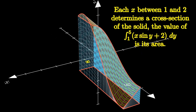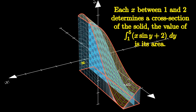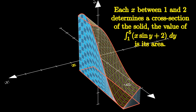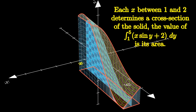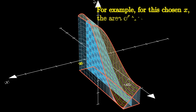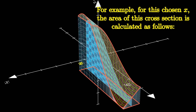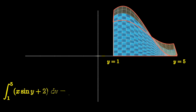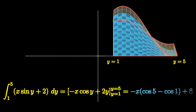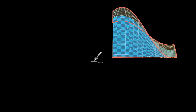Each X between 1 and 2 determines a 2D cross-section of this solid. Fixing X, the integral of our surface's expression with respect to Y gives the area of this cross-section. We'll calculate that now — we just apply our typical Calculus 1 rules of integration on the variable Y. The resulting area is an expression only depending on X, which makes sense because X determined the cross-section we're looking at.